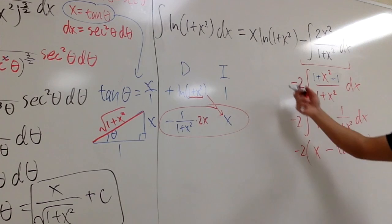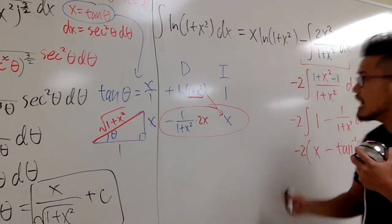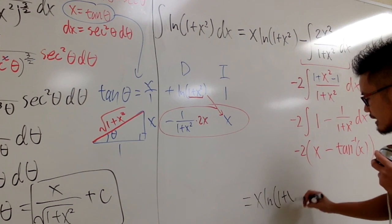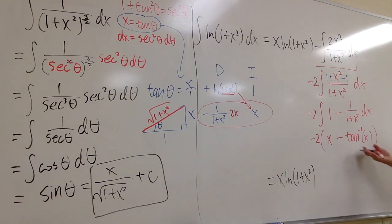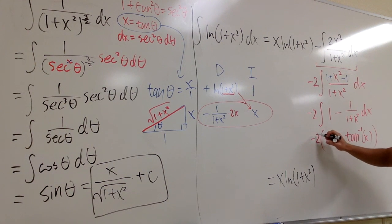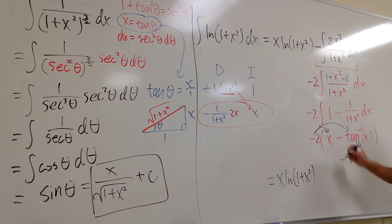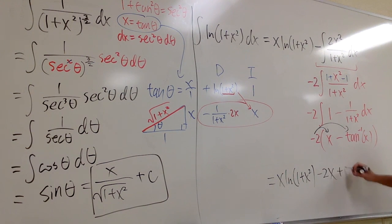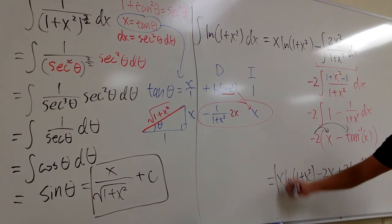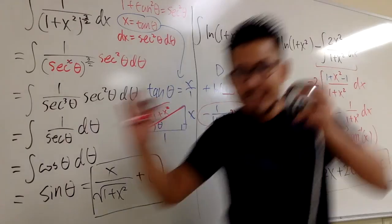Putting all the answers together: the first part is x times ln(1 plus x squared), then we distribute the negative 2 into the result — negative 2 times x gives negative 2x, and negative 2 times negative 1 gives positive 2, times inverse tangent of x. The final answer is x ln(1+x²) minus 2x plus 2 arctan(x), plus C.